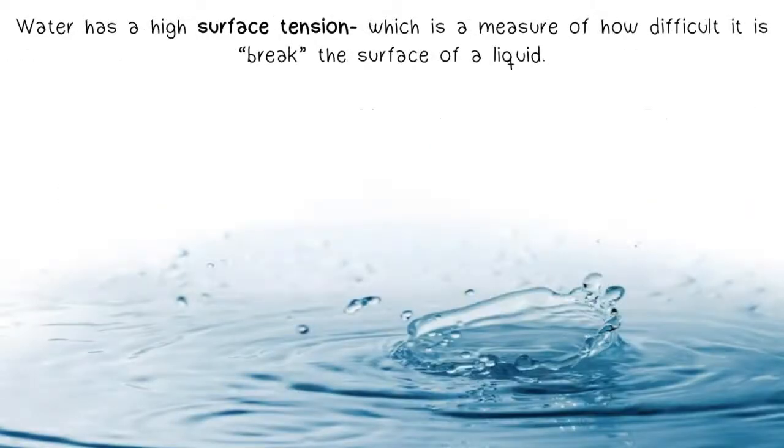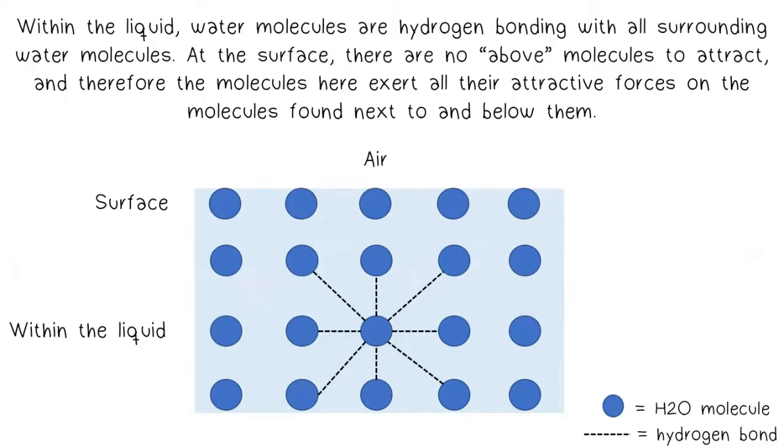Water has a high surface tension, which is a measure of how difficult it is to break the surface of a liquid. Within the liquid, water molecules are hydrogen bonding with all surrounding water molecules. At the surface, there are no above molecules to attract, and therefore the molecules here exert all their attractive forces on the molecules found next to and below them.